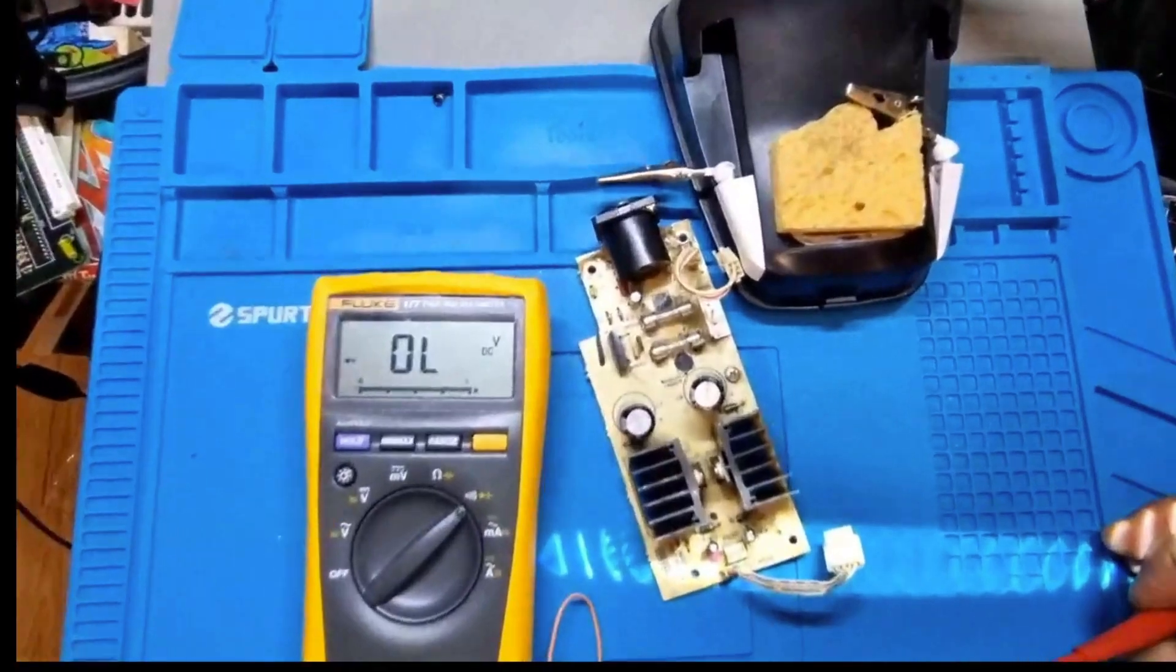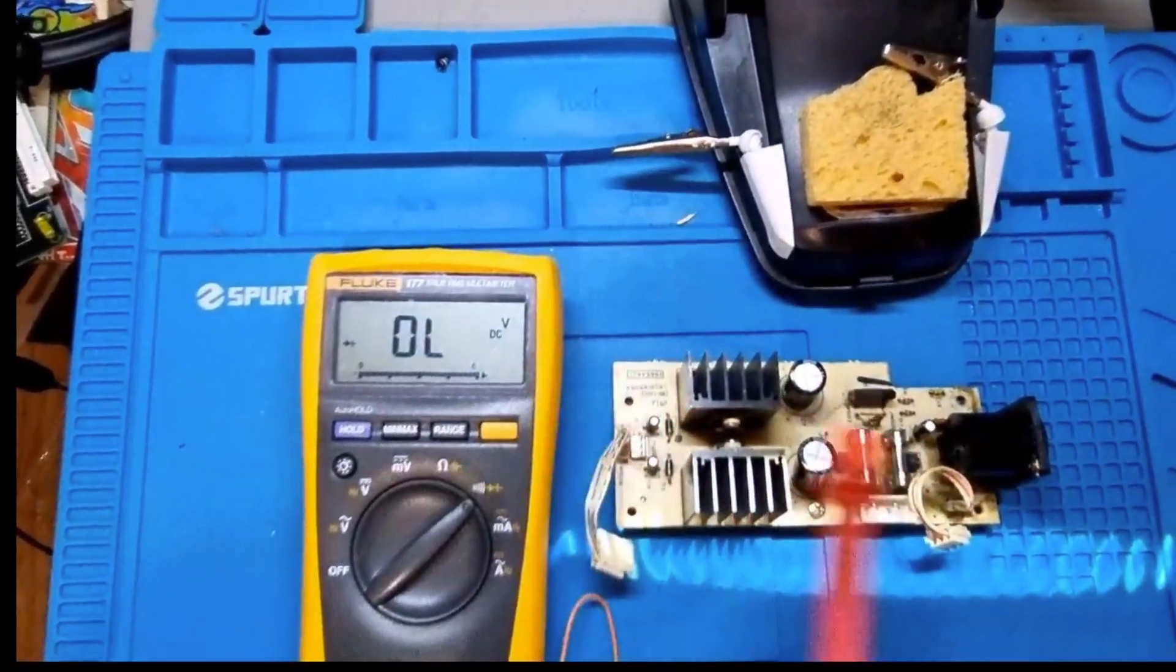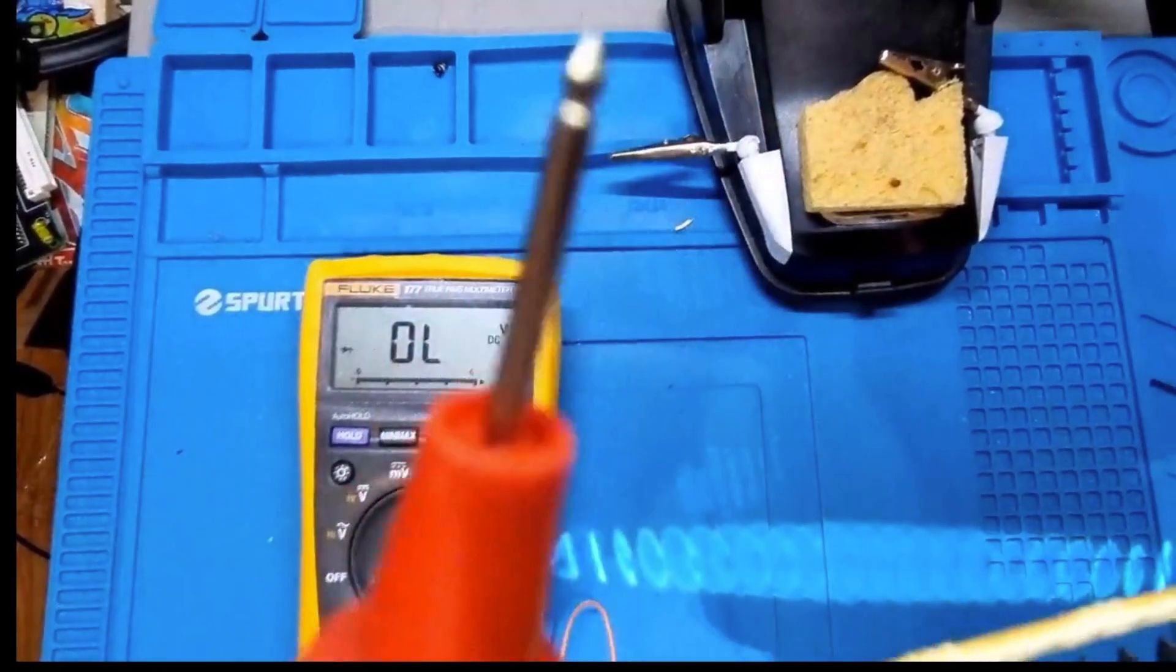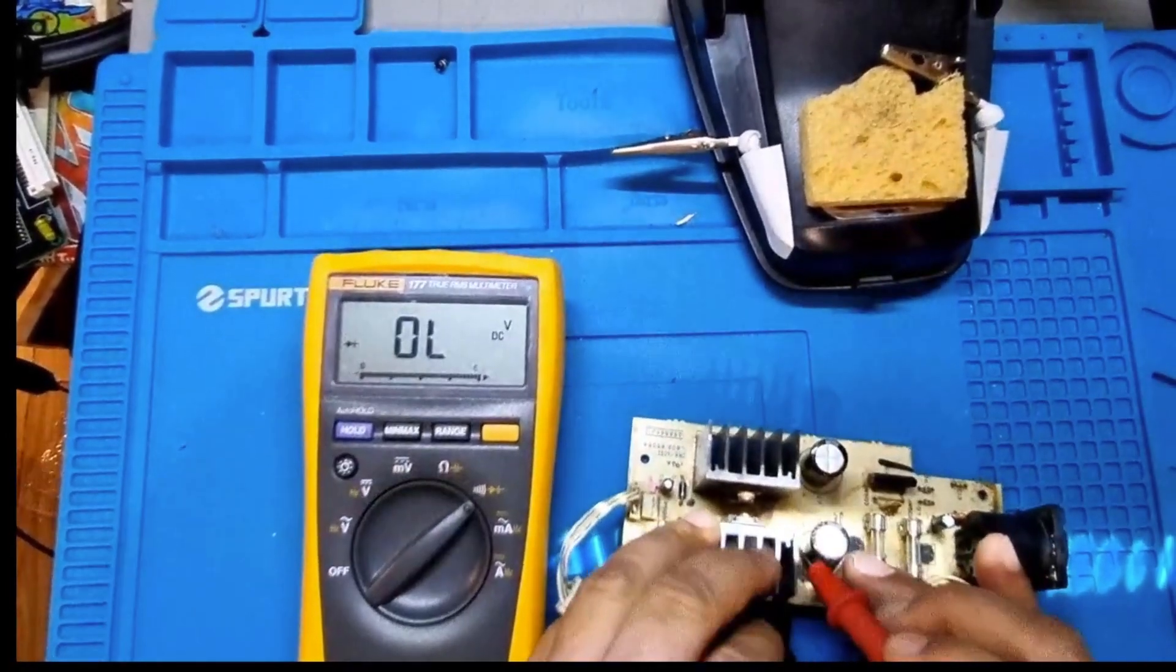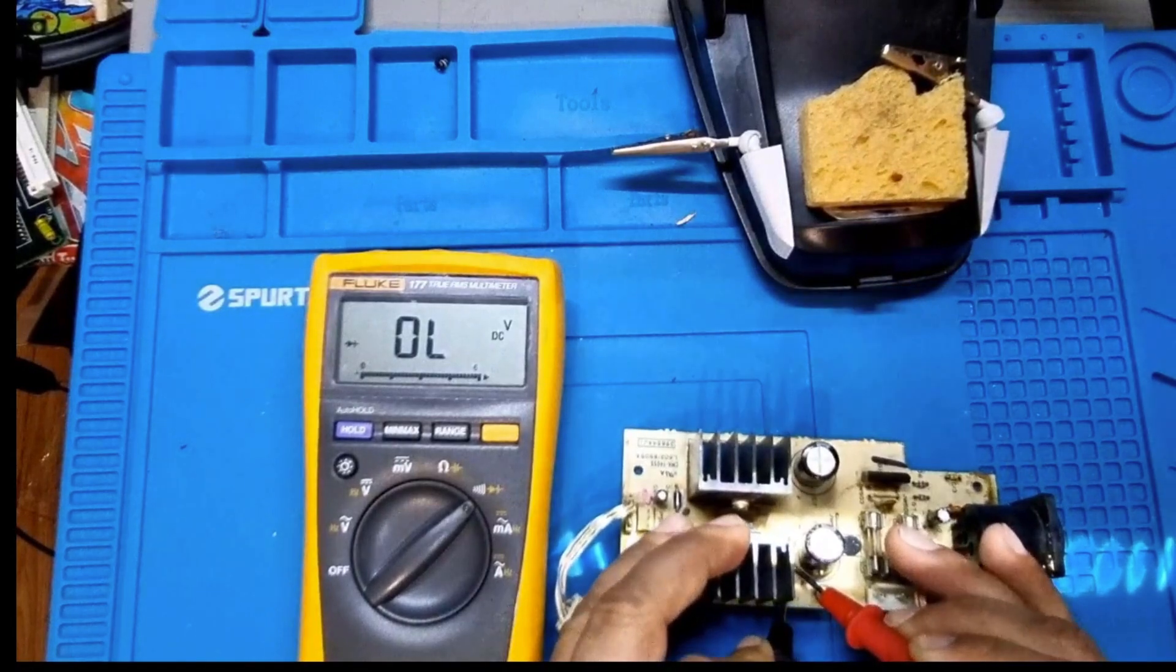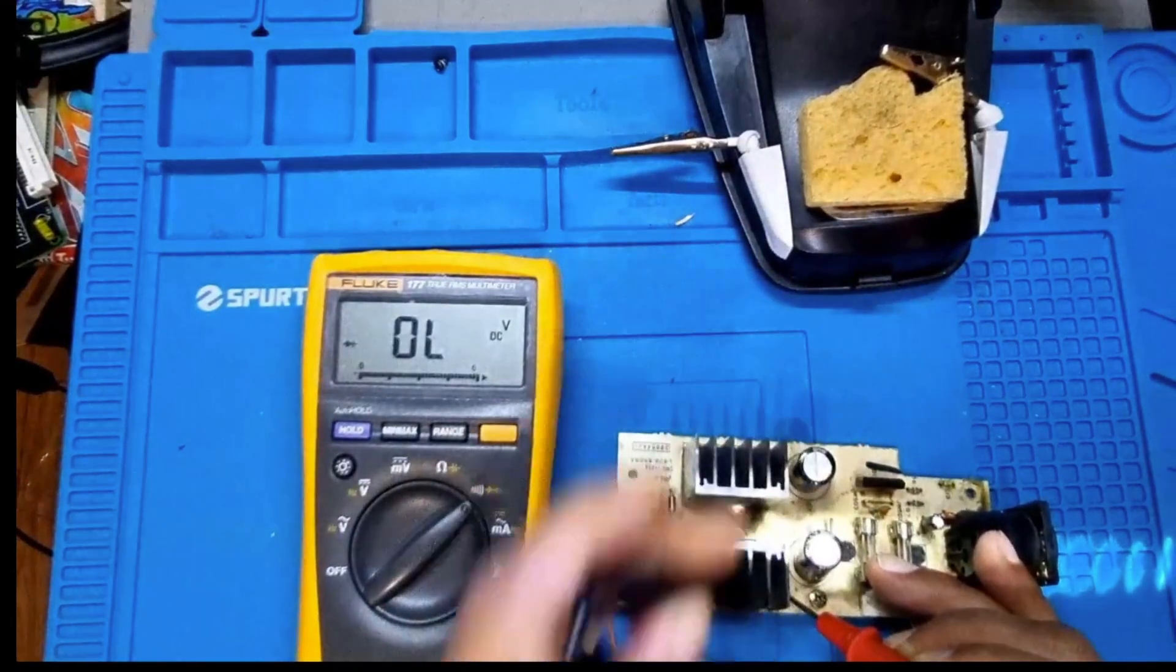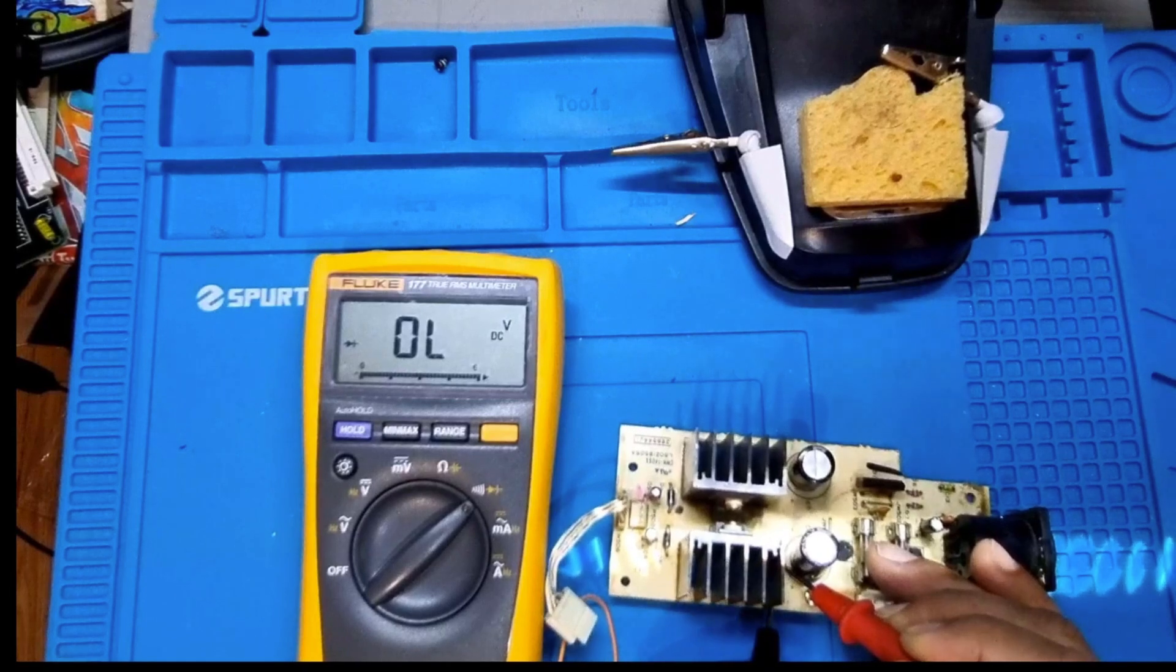Same for this one - 0.5 diode drop, so that diode's looking good. It was reading different in circuit. OL there which is also good. Then here we've got another two diodes, D2 and D3. This one down is D4 and D5.